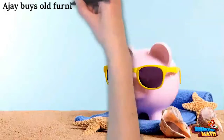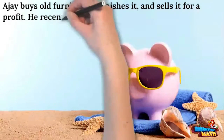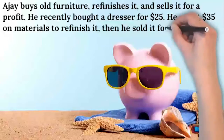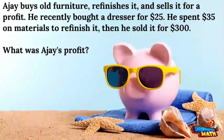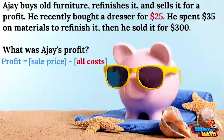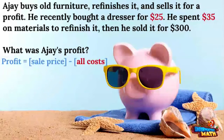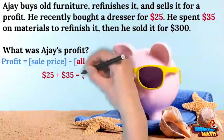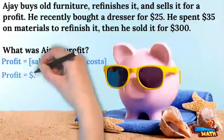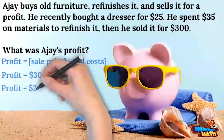AJ buys old furniture, refinishes it, and sells it for a profit. He recently bought a dresser for $25, spent $35 on materials to refinish it, then sold it for $300. What was AJ's profit? Look at the formula: the sale price is $300. The costs are $25 for the original purchase and $35 for materials, so we have to subtract both amounts. We can add up all the costs first: $25 plus $35 equals $60. Now subtract that $60 from the $300 sale price: $300 minus $60 equals $240. AJ made a profit of $240.